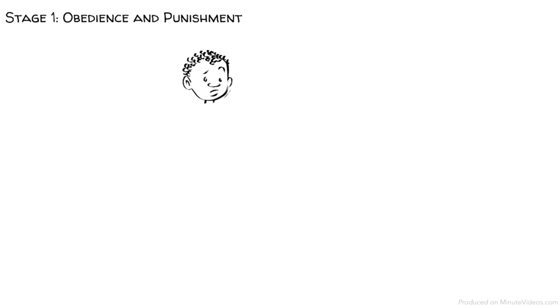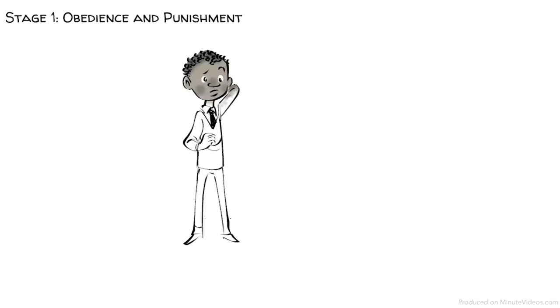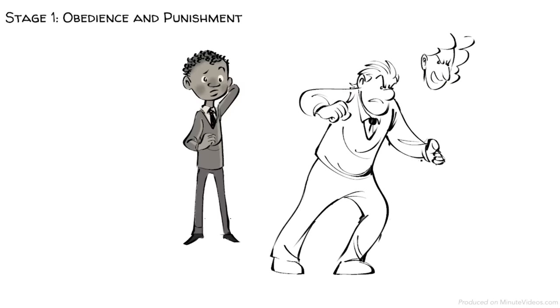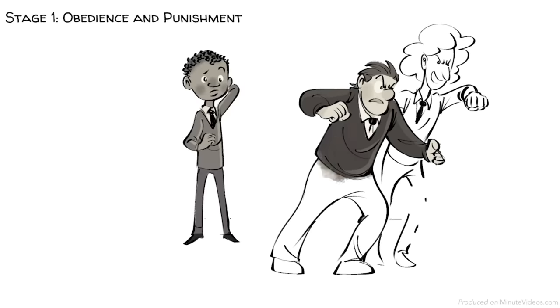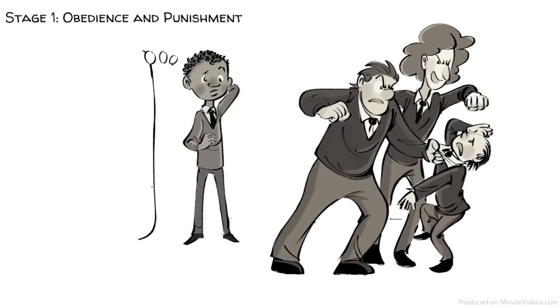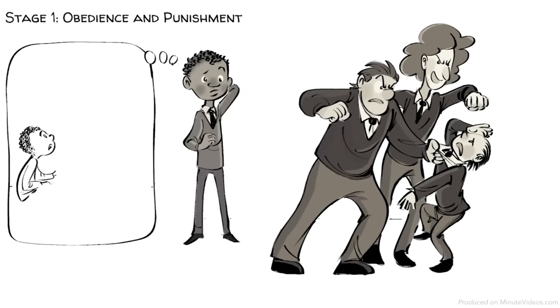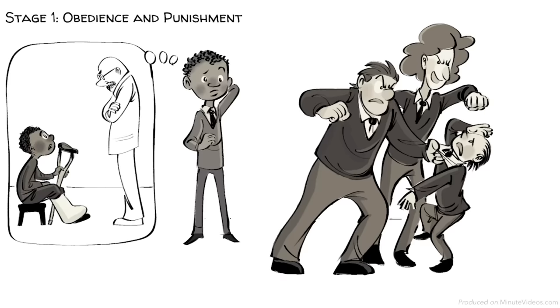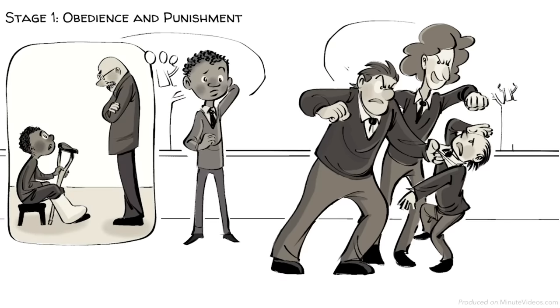At stage one, we make moral judgments based on obedience and punishment. Finn's sense of good or bad is directly linked to whether he gets punished or not. Finn sees what is happening to his friend and wants to help, but he doesn't, because he is afraid the teacher may punish him if he gets caught fighting. He asks himself: how can I avoid punishment?